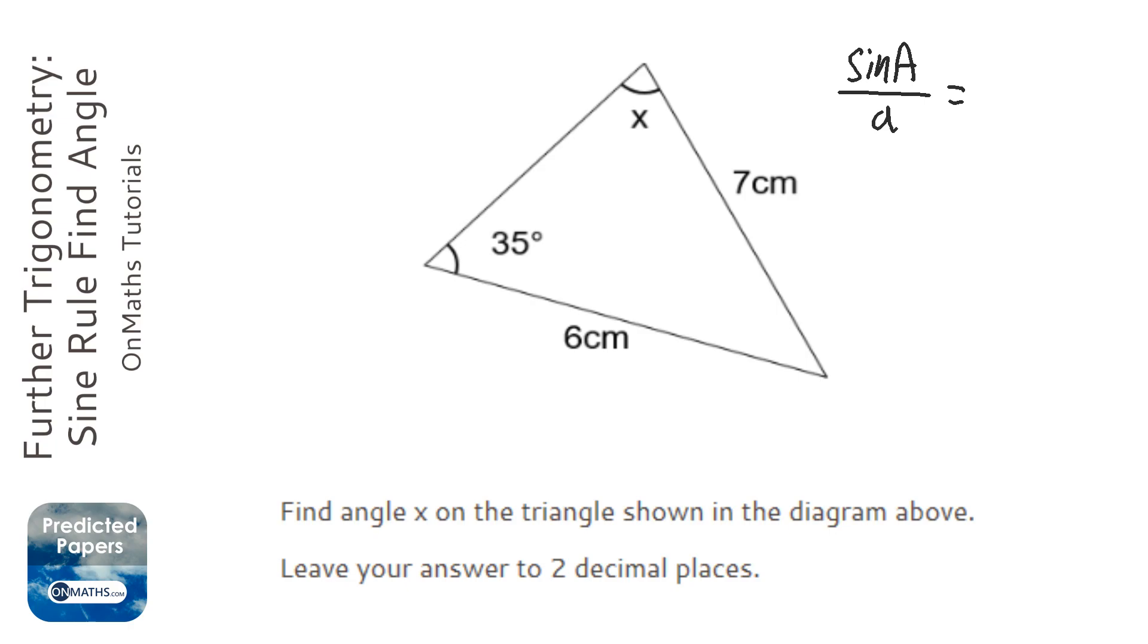So it's sin A over a equals sin B over b. Now it doesn't matter what you call A and B, although I always put the unknown one on the left hand side, and the lowercase a needs to be opposite the uppercase A, and so we're going to call B there. B needs to be the angle and little b needs to be the length.